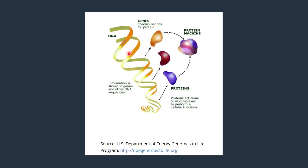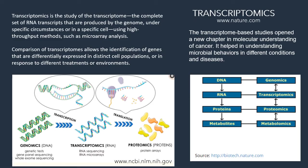In this diagram, you can see that the base is DNA — information is stored in genes and other DNA sequences. A gene which contains the recipe for a protein will give rise to a protein. Protein machines are transcribed and then help translate mRNA to get converted into protein. Proteins act alone or in complex to perform cellular functions, and all these mechanisms and enzymes are dependent on the DNA. So the base is DNA, and genomics is the first step.